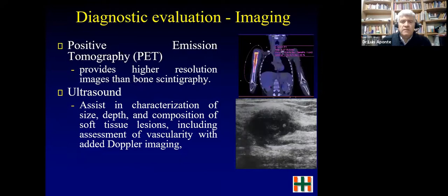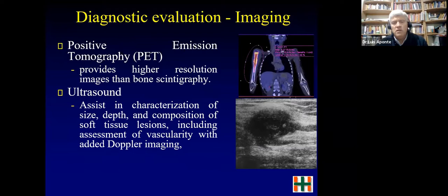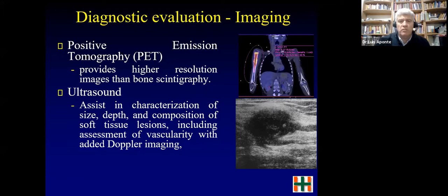PET scan is complex; you need an established diagnosis of sarcoma, and it is mainly used for staging. Ultrasound in soft tissue can provide information about size, depth, and composition, but its disadvantage is operator dependence and variable image quality, though it is helpful for some tumors.